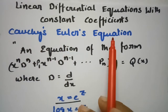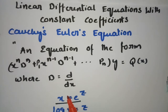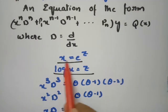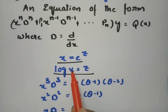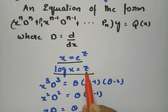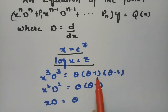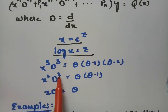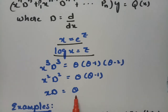This is Cauchy's Euler equation. In order to transform it into a linear equation with constant coefficients, there is a substitution: wherever you find x, you write it as e^z, so in place of log x, we write z. Then x³D³ is replaced by θ(θ-1)(θ-2), x²D² is replaced by θ(θ-1), and xD is replaced by θ.